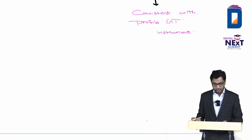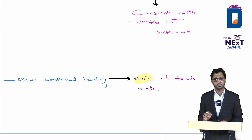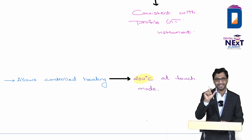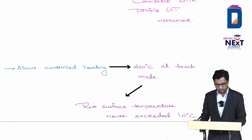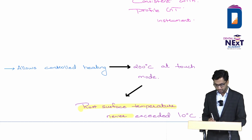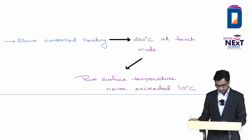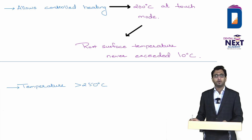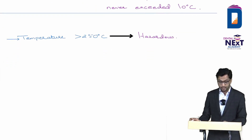System B allows controlled heating. The temperature is set at 200 degrees Celsius using Touch mode, and it does not exceed this. This controlled temperature ensures root surface temperature never exceeds 10 degrees Celsius, preventing bone damage. Any temperature setting above 250 degrees Celsius in System B is hazardous. Therefore, set at 200 degrees Celsius in Touch mode for safe continuous wave compaction.